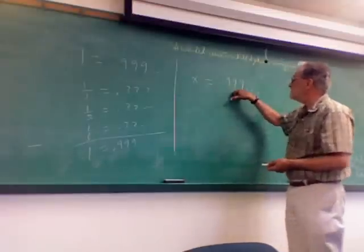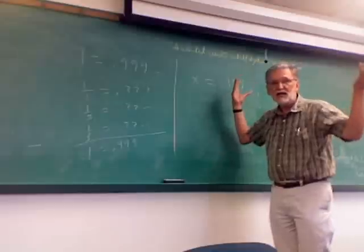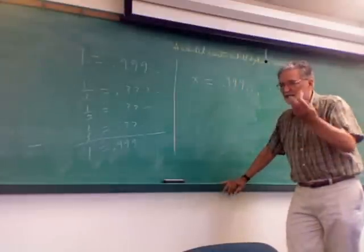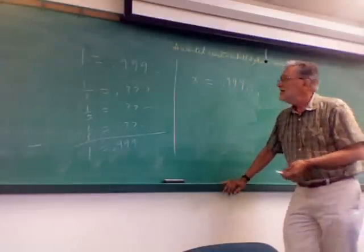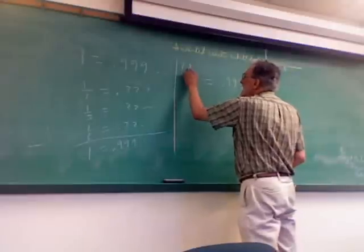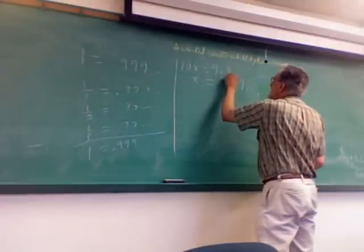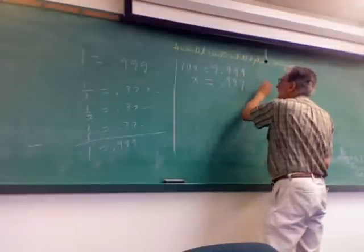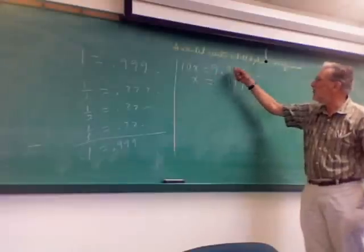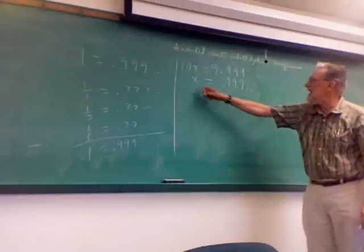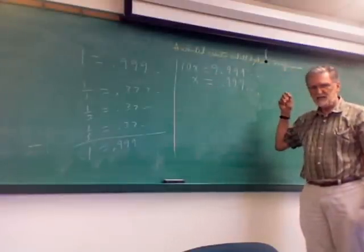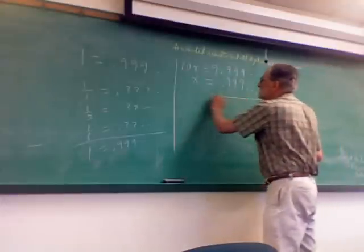Alright, so I got X equals 0.9999 and I'm saying, look, I don't know what 0.999 is, but at least it's something. Now, if I multiply both sides by 10, I'll get this. I'll get 10X is nine point and a bunch of nines, and X is just a bunch of nines.